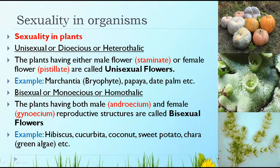Next we will be studying about sexuality in organisms. There are two types: unisexual — also called dioecious or heterothalic — and bisexual — also called monoecious or homothalic.